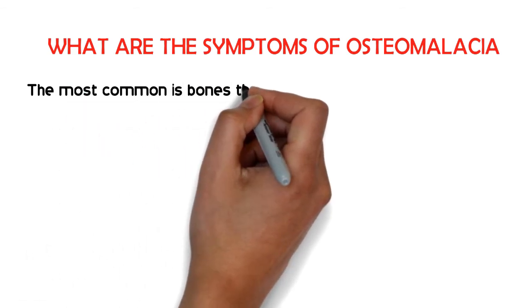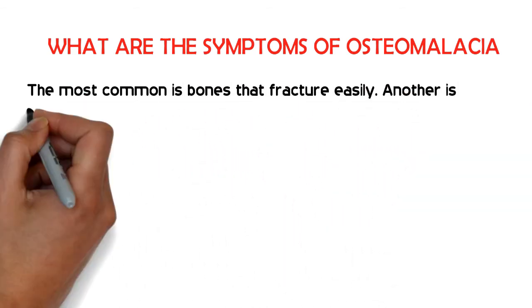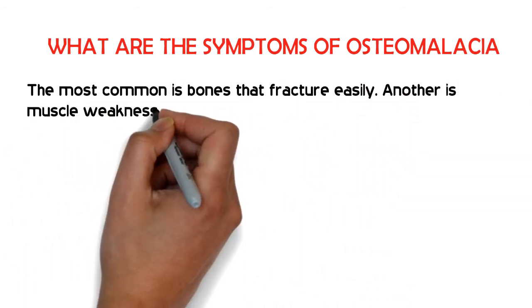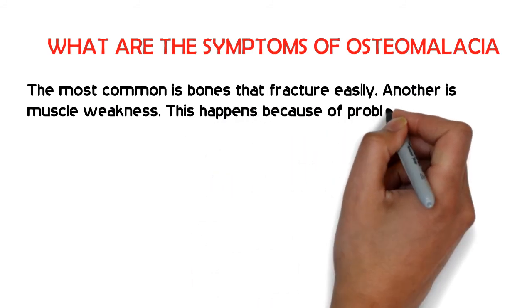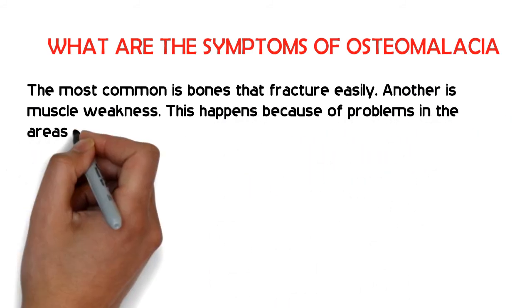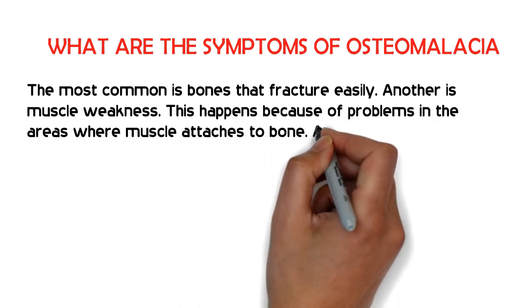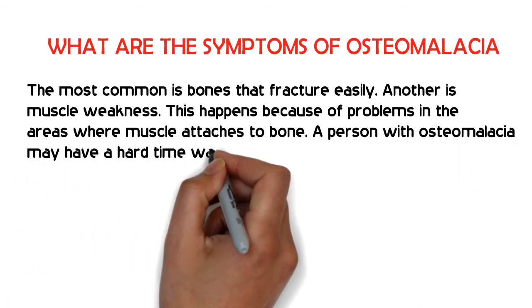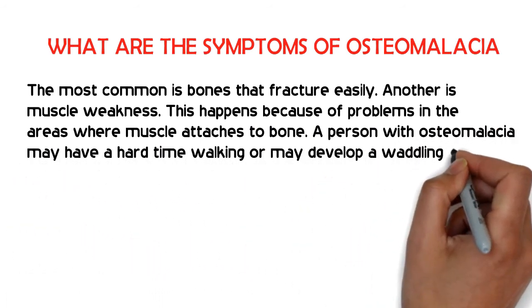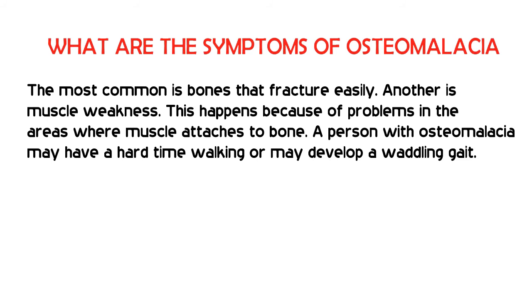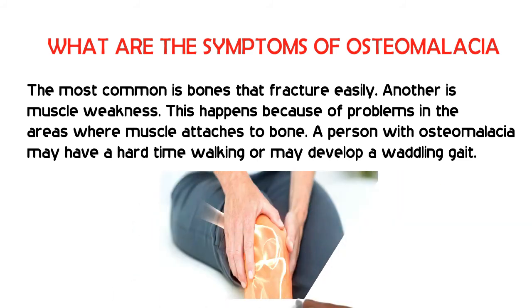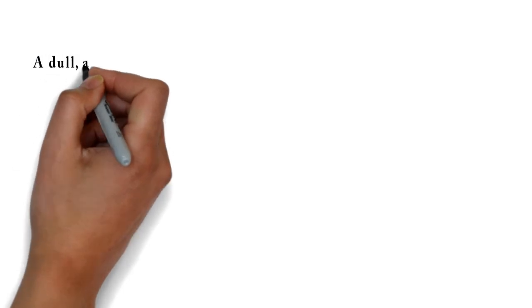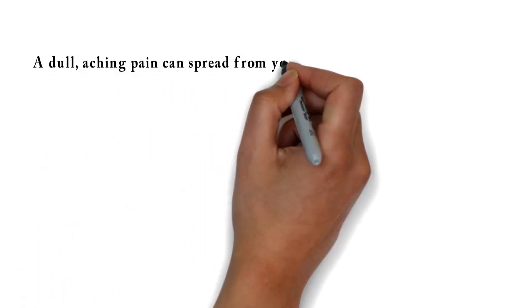There are a few symptoms of osteomalacia. The most common is bones that fracture easily. Another is muscle weakness, which happens because of problems in the areas where muscle attaches to bone. A person with osteomalacia may have a hard time walking or may develop a waddling gait. Bone pain, especially in your hips, is also a common symptom.